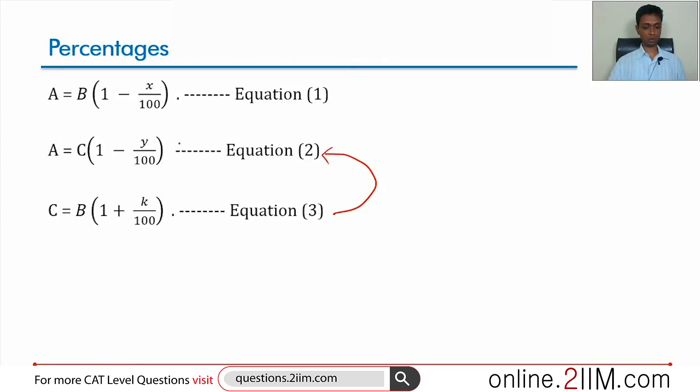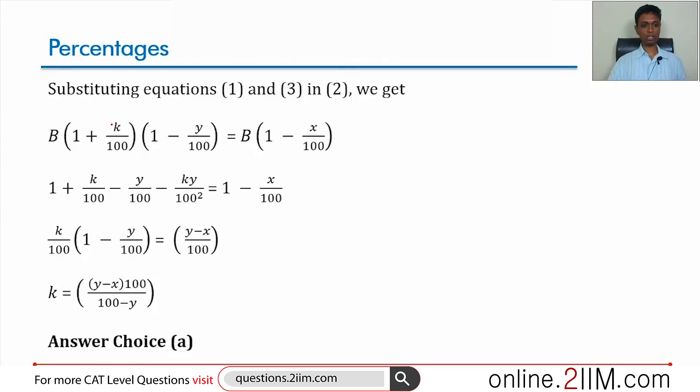We will equate these two. B into 1 plus k by 100 into 1 minus y by 100 is B into 1 minus x by 100. The B gets knocked out.